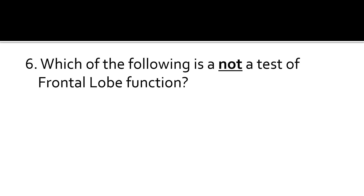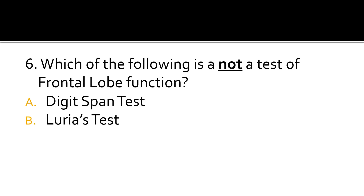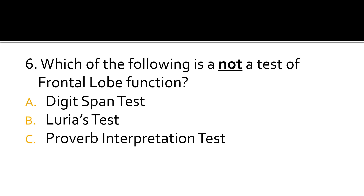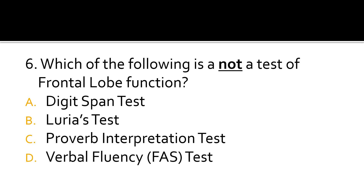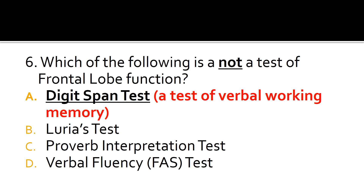Question 6. Which of the following is not a test of frontal lobe function? Is it the digit span test, the Luria test, the proverb interpretation test, or the verbal fluency test? The correct answer is A. The digit span test is not a test of frontal lobe function — it is a test of verbal working memory — while the other three are tests of frontal lobe function.